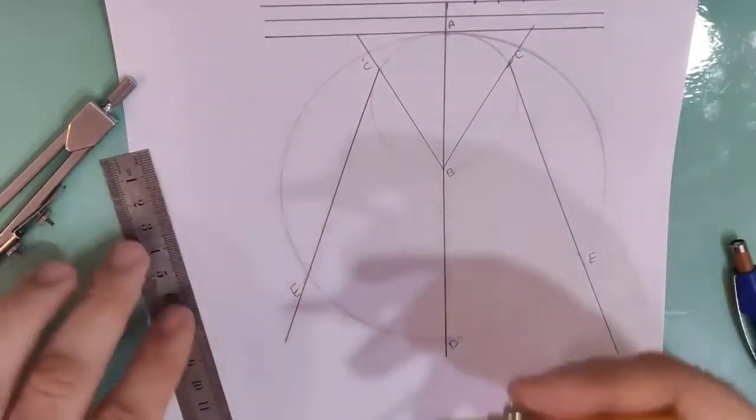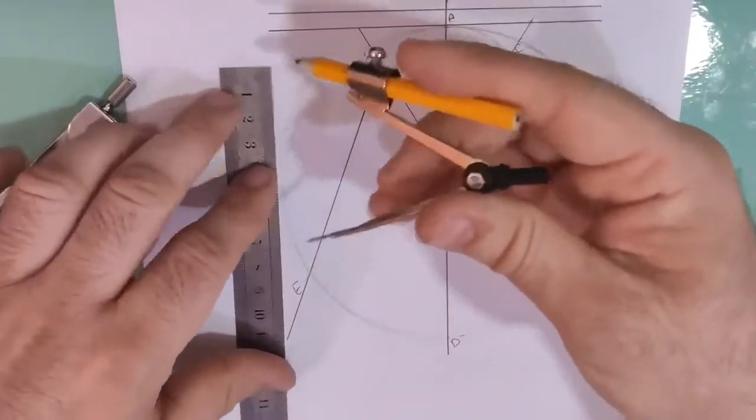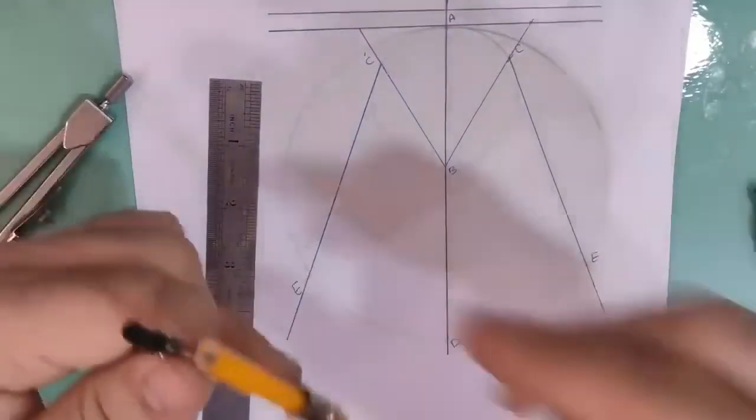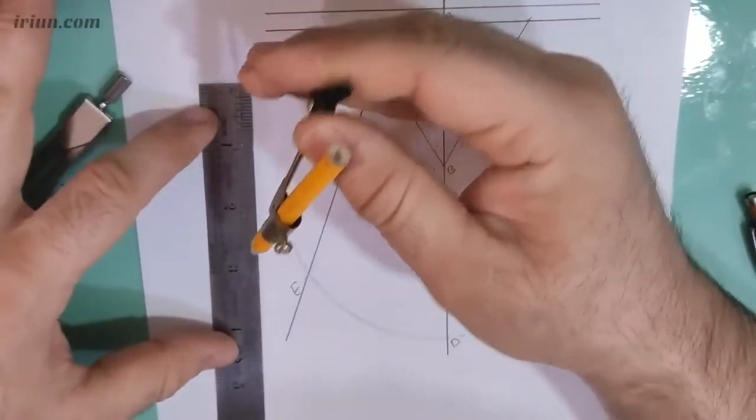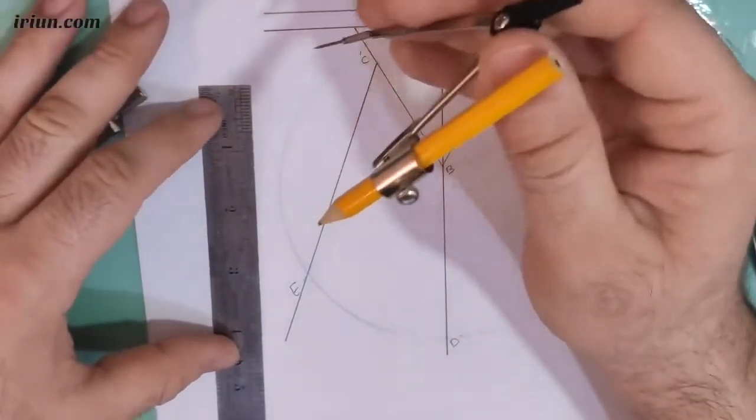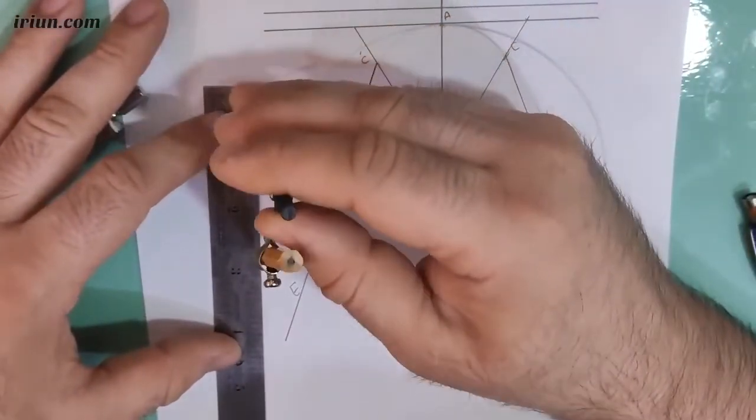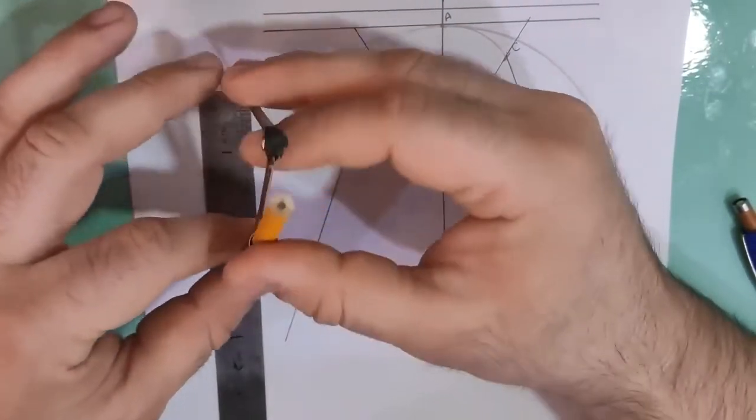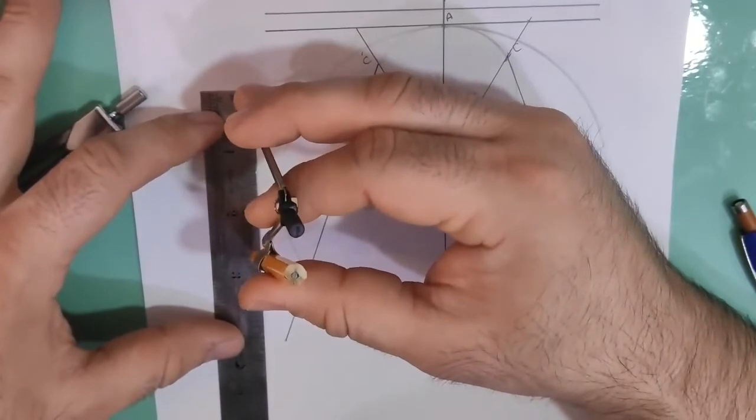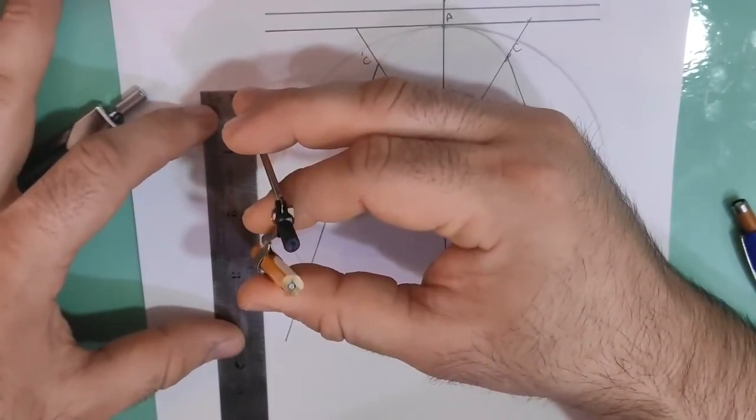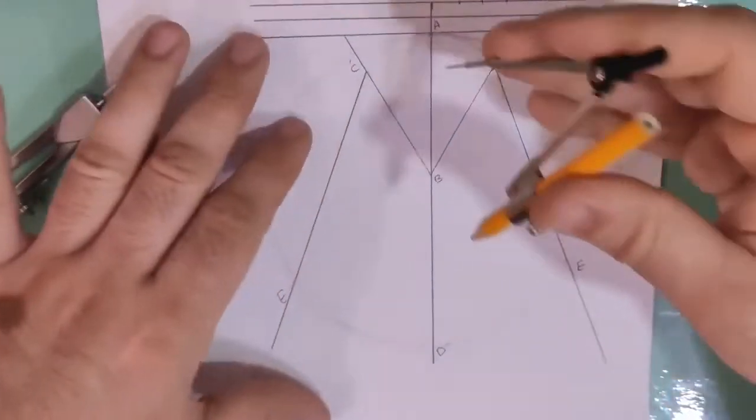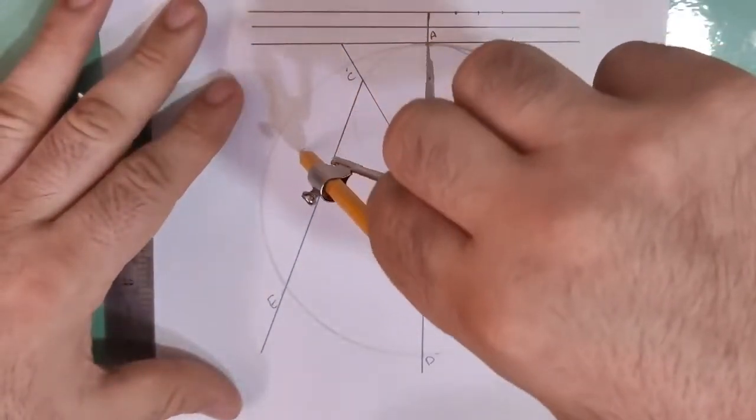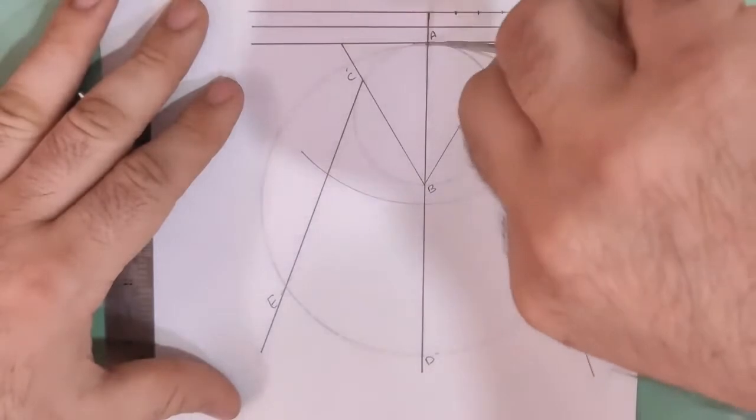Then we measure the radius about two and a half inches. We use it. The last one is using the inches. This is the parameters. Two and a half inch. And draw an arc like this.